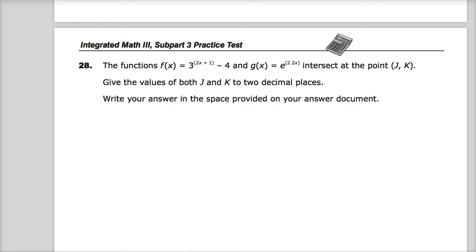So, question number 28 says: The functions f(x) equals 3 raised to the quantity 2x plus 1 minus 4, and g(x) equals e raised to the power of 2.2x intersect at the point (j,k). Just kidding. Give the values of both j and k to two decimal points. I guess it would be like j.us and k.id, I don't know. Write your answer in space provided on your answer document.